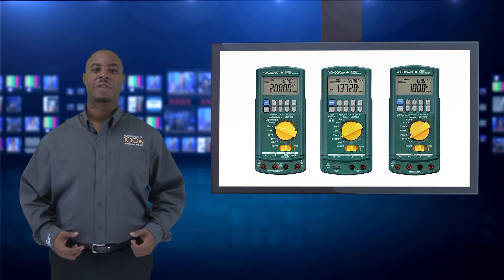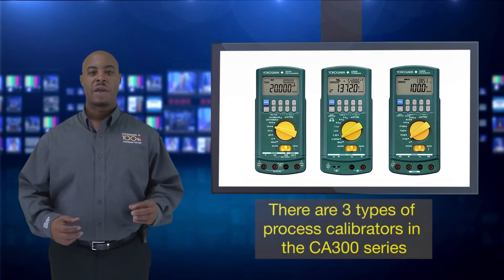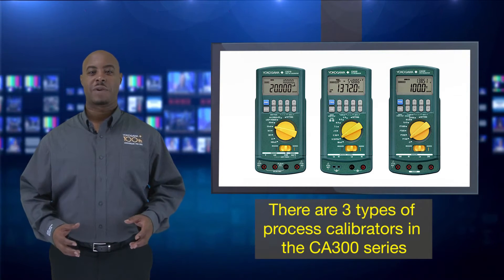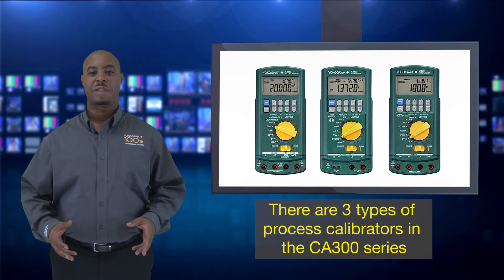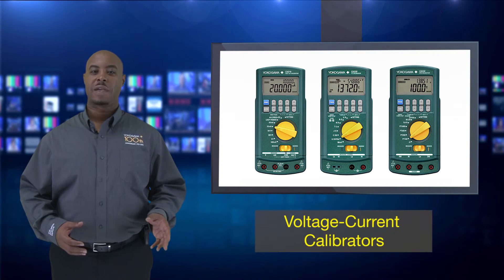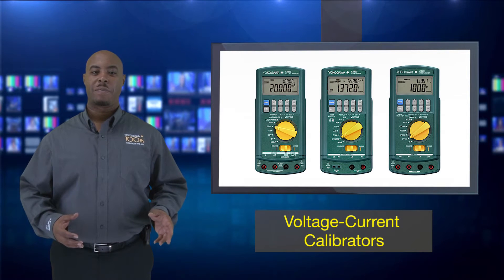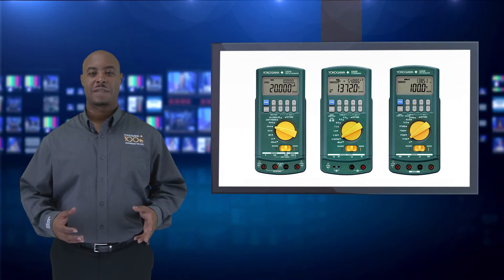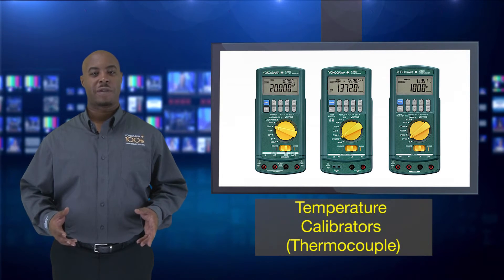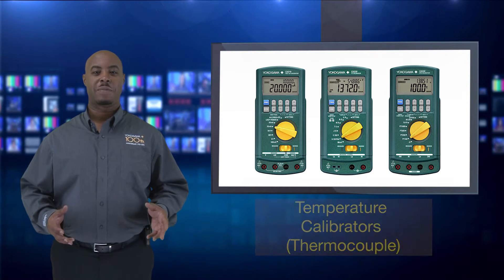Introducing the CA300 series process calibrator. Yokogawa offers three different types of process calibrators in our CA300 series: voltage current calibrator to simulate or measure a signal for loop indication and temperature calibrators for simulating and measuring thermocouples and RTD.